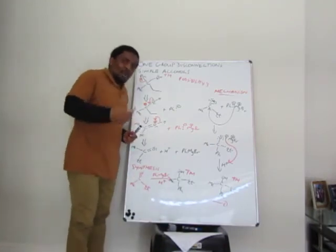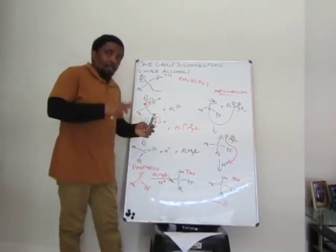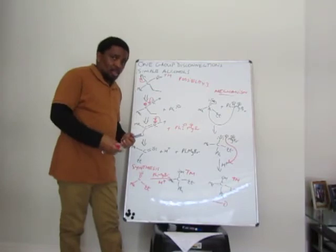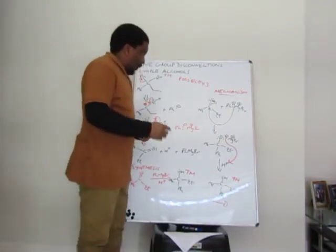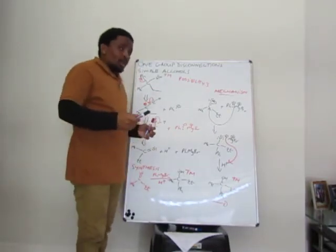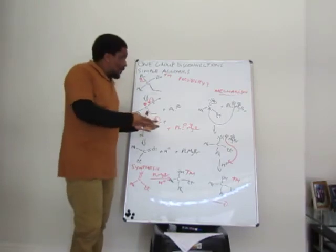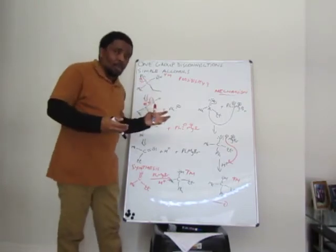So I've got all my possibilities here: possibility one, possibility two, possibility three. In terms of this disconnection approach, the rule here when you've got all these possibilities...